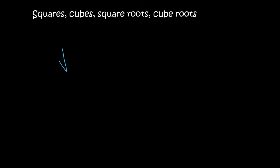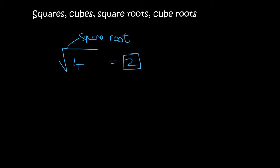Now if I give you something like this, we call it a square root. What this is saying is: what times what gives you 4? Well, 2 times 2 gives me 4, so the answer is 2. This is saying: what times what gives you 9? Well, 3 times 3 gives you 9, so the answer is 3. What times what gives you 16? That's 4.